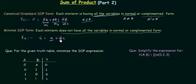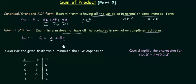For example, in function G with three variables A, B, and C, in the first min term we don't have B or C, and in the second min term we don't have A. So this we call the minimal SOP form.